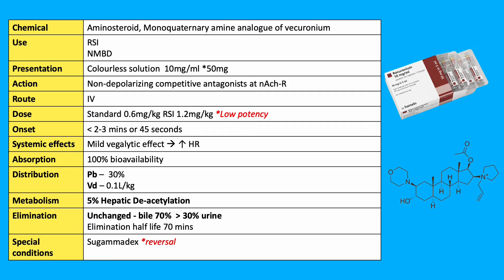Rocuronium is an amino steroid. It is a monocaternary amine analogue of Vecuronium. It can be used for an RSI induction but also standard inductions. It's a clear colourless solution at 10mg per ml, classic unit 50mg ampoule. It's given by the IV route so it has 100% bioavailability.